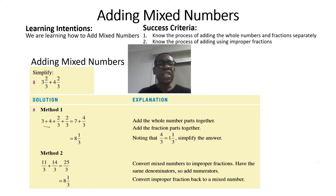3 plus 4 gives us 7. And 2/3 plus 2/3, that would give us, common denominator is 3, the numerator will be 2 plus 2, and so that gives us 4/3.